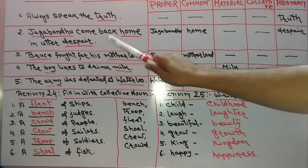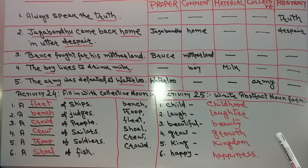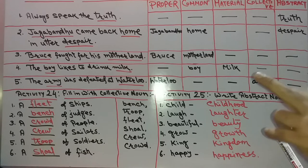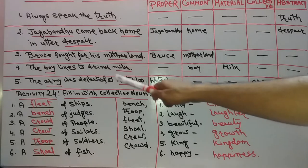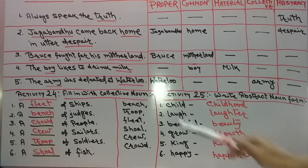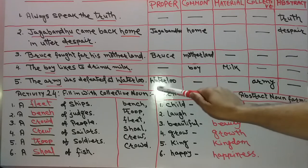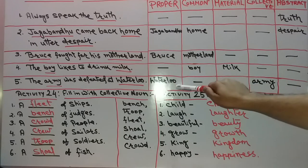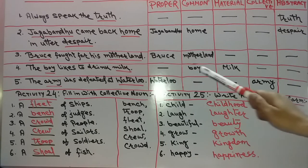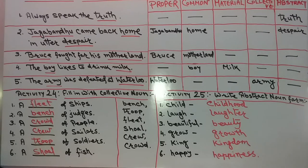Number 5: The army was defeated at Waterloo. Waterloo is a place, and Waterloo is a famous battle — so Waterloo is a proper noun. Army means a group of soldiers, so army is a collective noun.